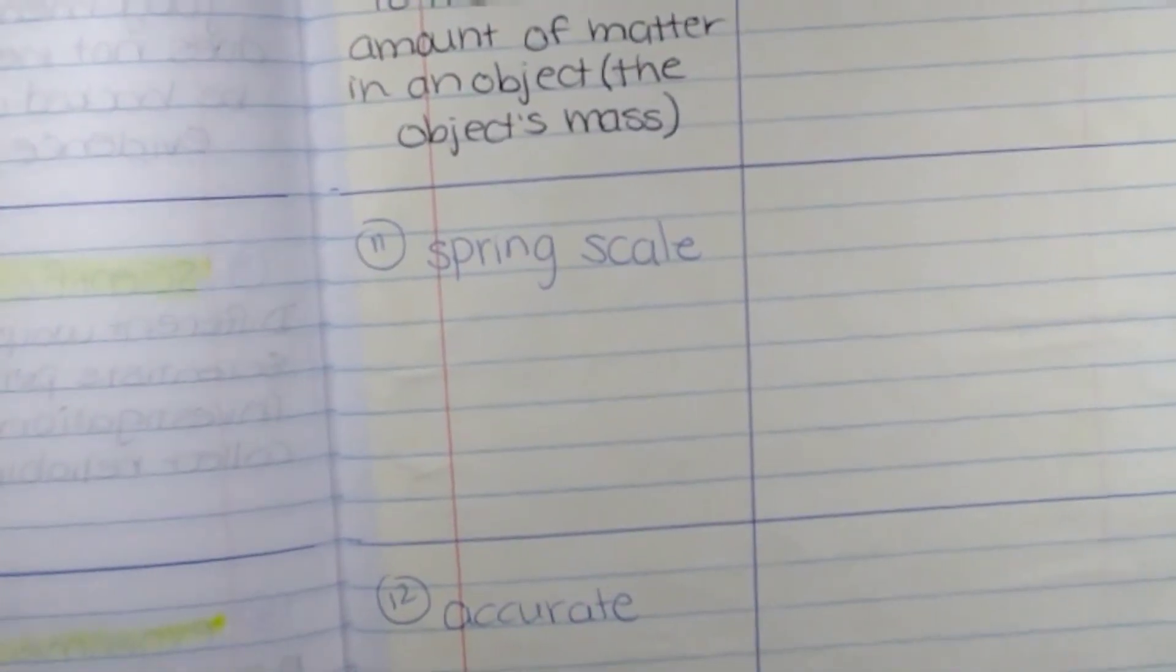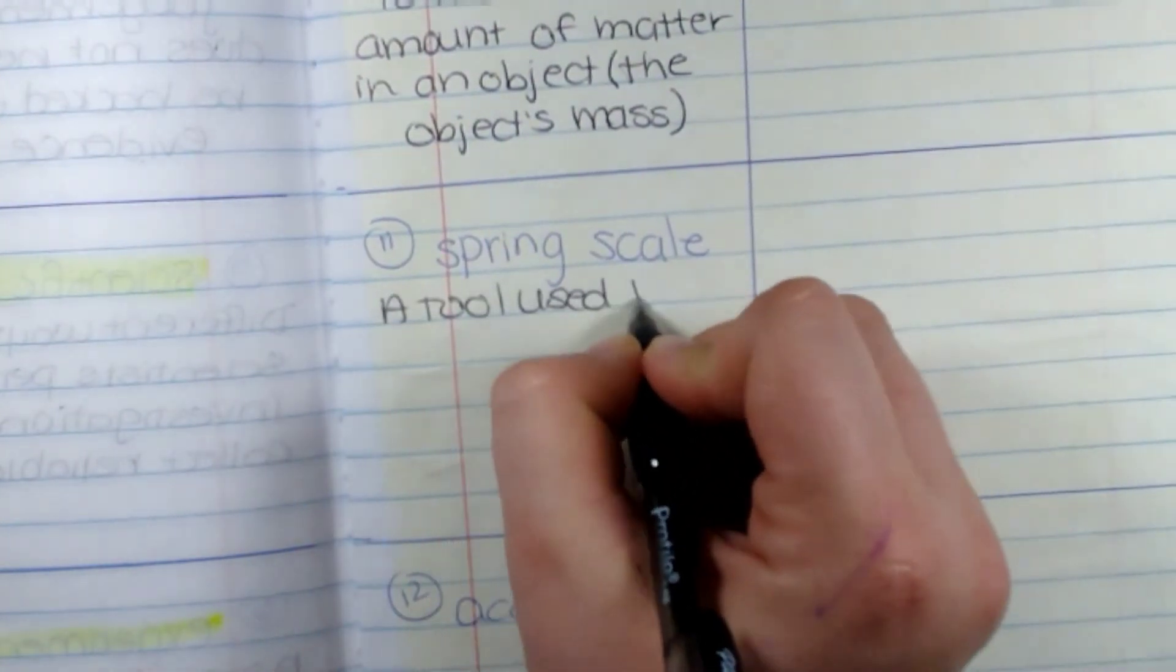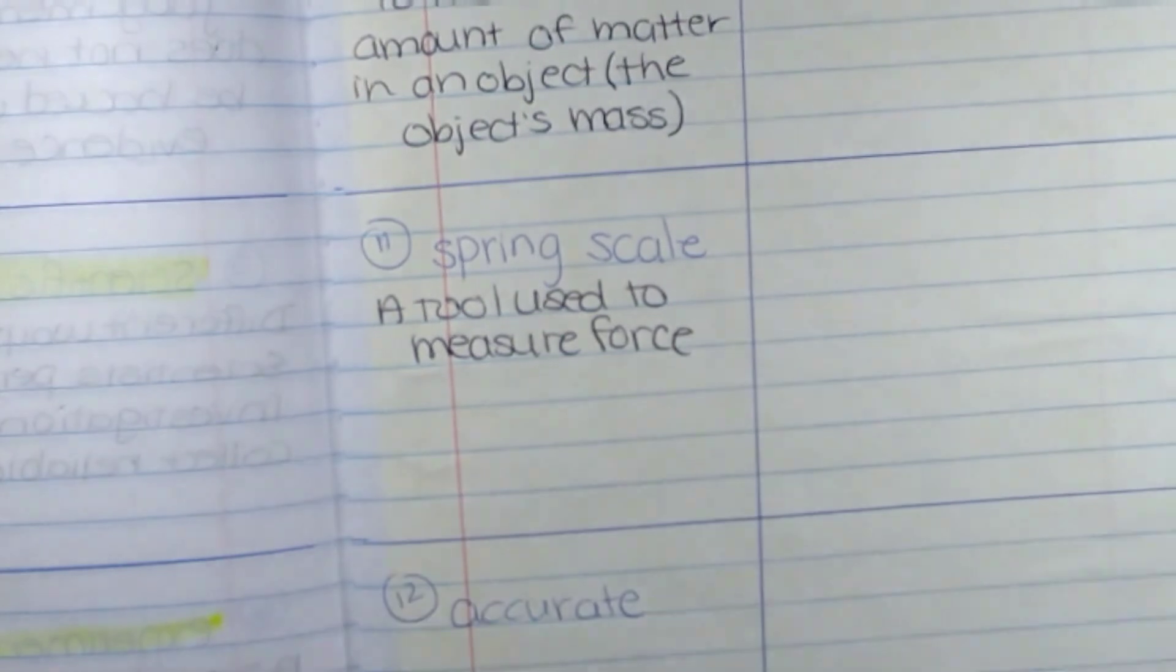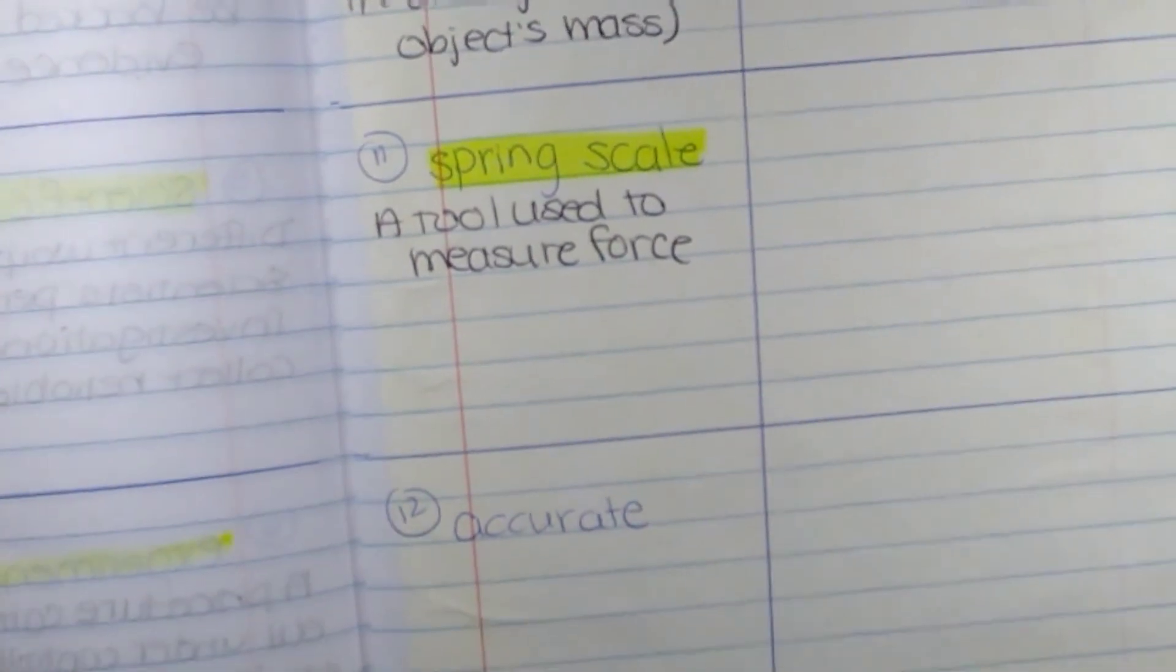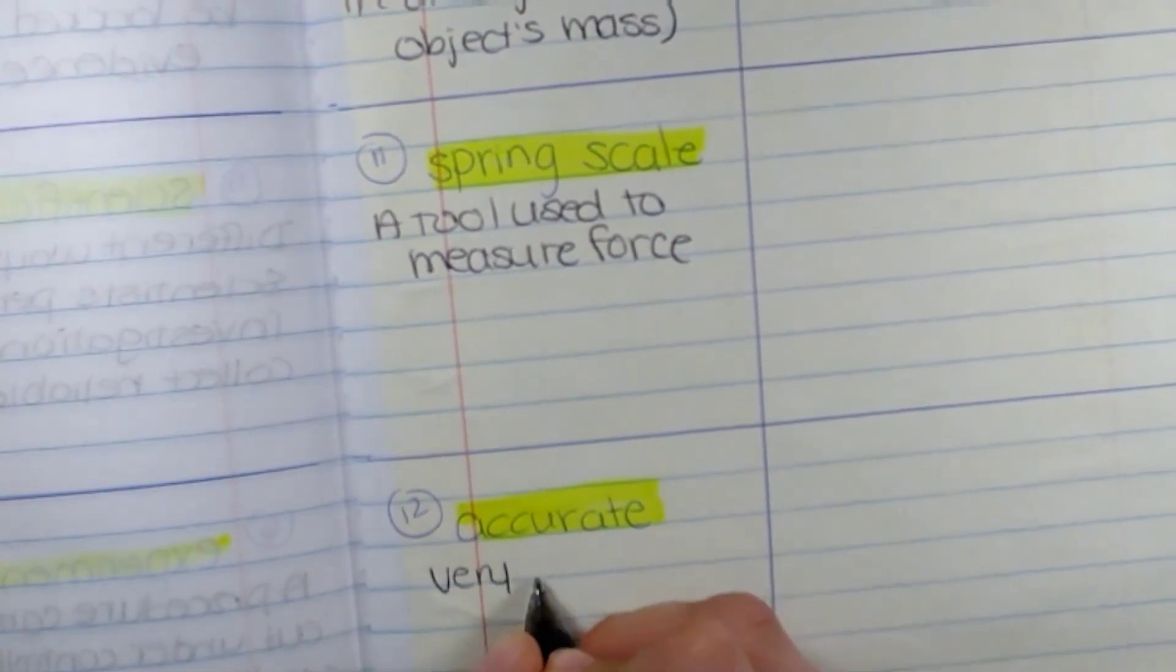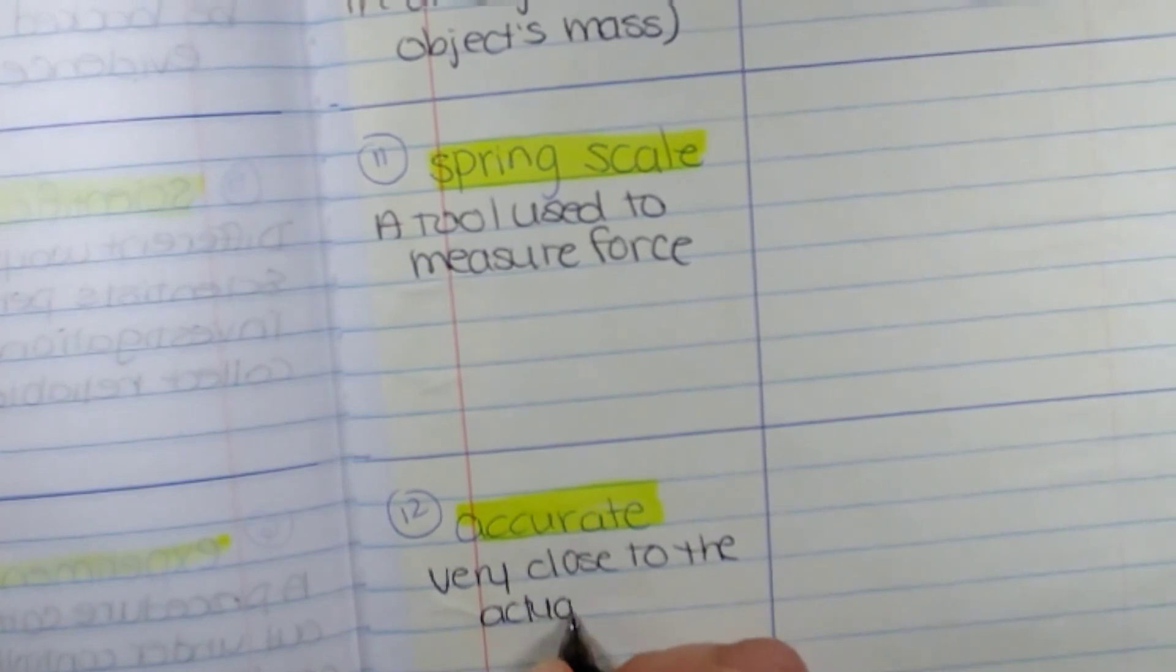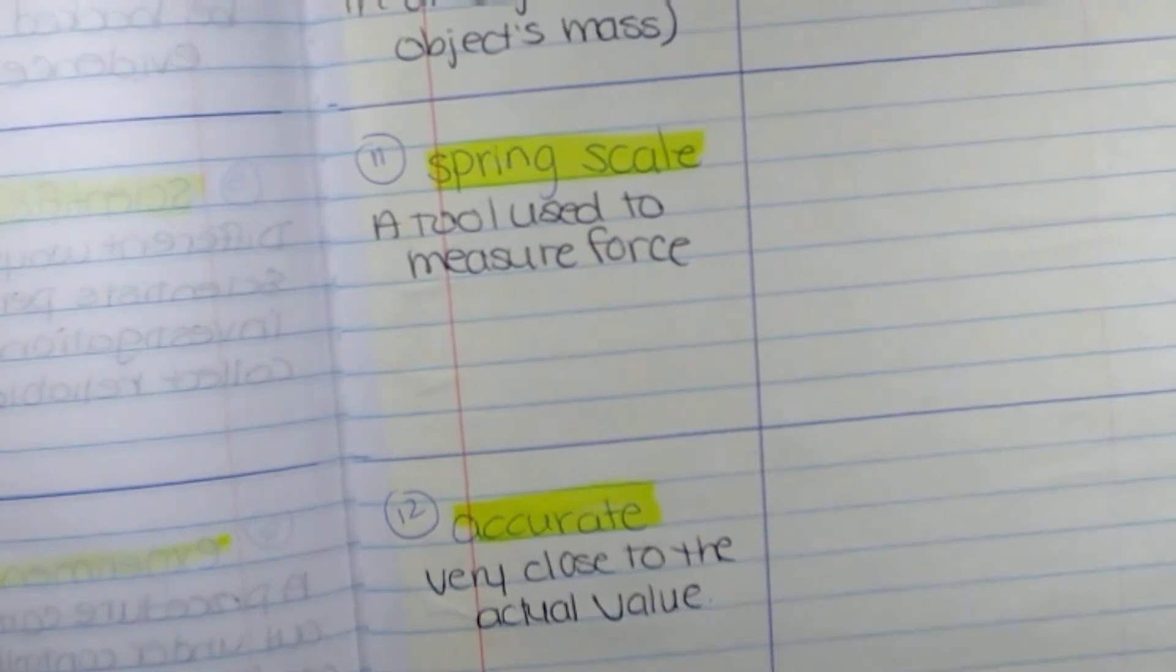Second to last one is a spring scale, it is a tool used to measure force. And the last one is the word accurate. And in science, this word is very close to the actual value. Like if it is 13 centimeters and I say 12.9 centimeters, that's very, very close. So those are your words for the nature of science unit.